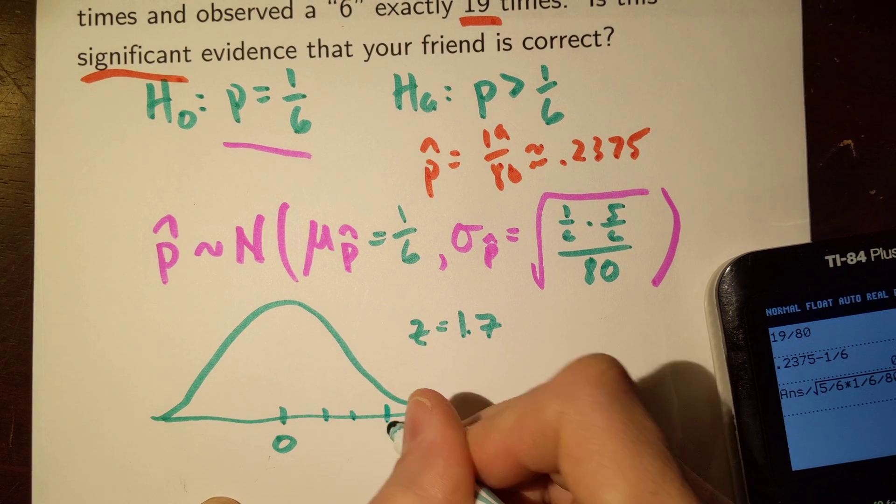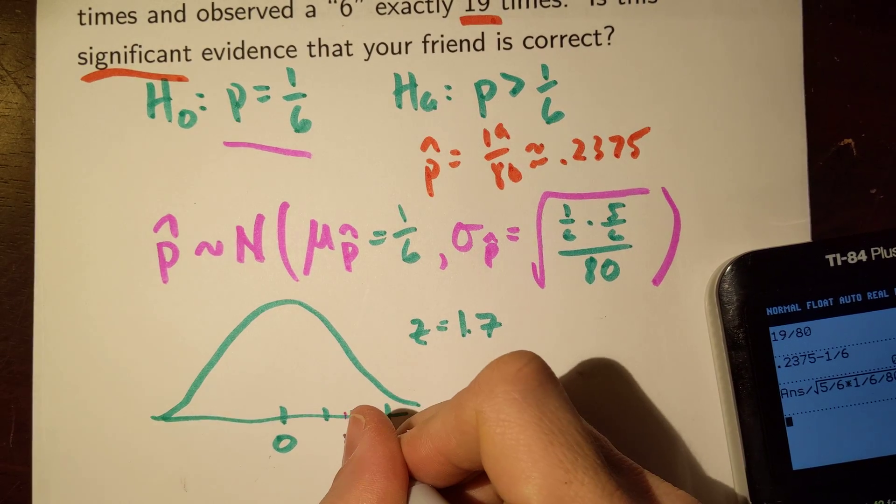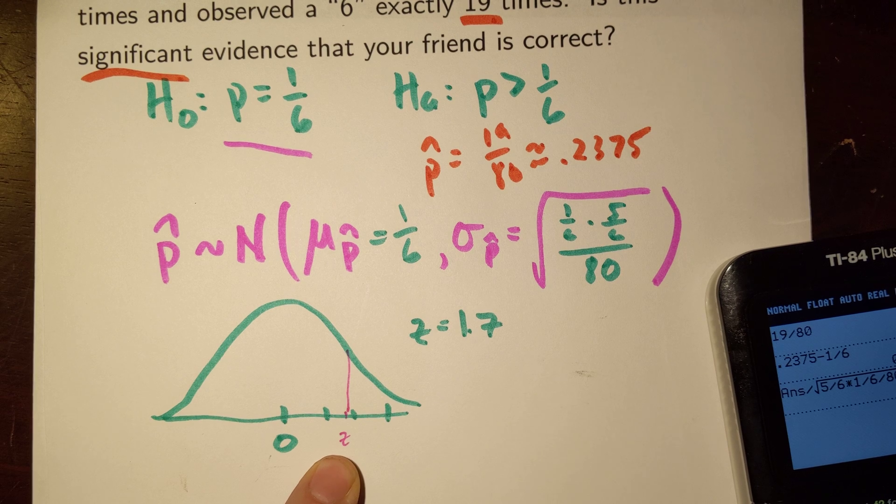So where the heck would 1.7 be relative to here? Well, let's see here. There's 1, 2, 3 standard deviations. A Z of 1.7 would be right about there.